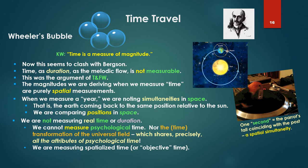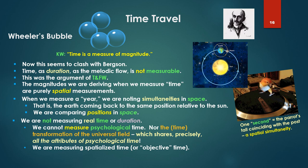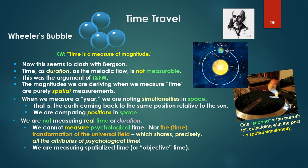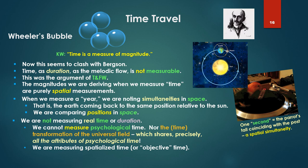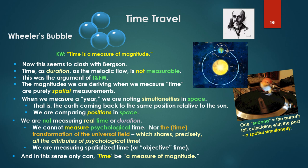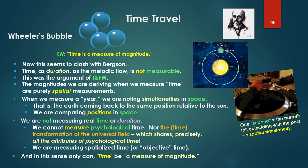So we're equivocating here the meaning of time. The magnitudes we are deriving when we measure time, objective time, are purely spatial measurements. When we measure a year, we are noting simultaneities in space. We are comparing positions in space. So we are not measuring real time or, in Bergson's preferred terminology, duration, concrete, experience, psychological time. We cannot measure psychological time, nor the time transformation of the universal field, because this time transformation of the universal field shares precisely all the attributes of psychological time.